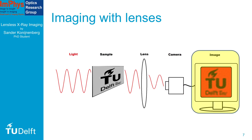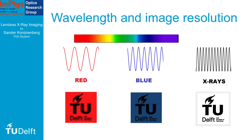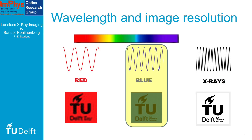The image we get has limited resolution, which means that there is a limit to the smallest detail we can see. This limit depends on the light we use. For example, with red light, which has a long wavelength, we can see only few details. With blue light, which has a shorter wavelength, we can see more detail.